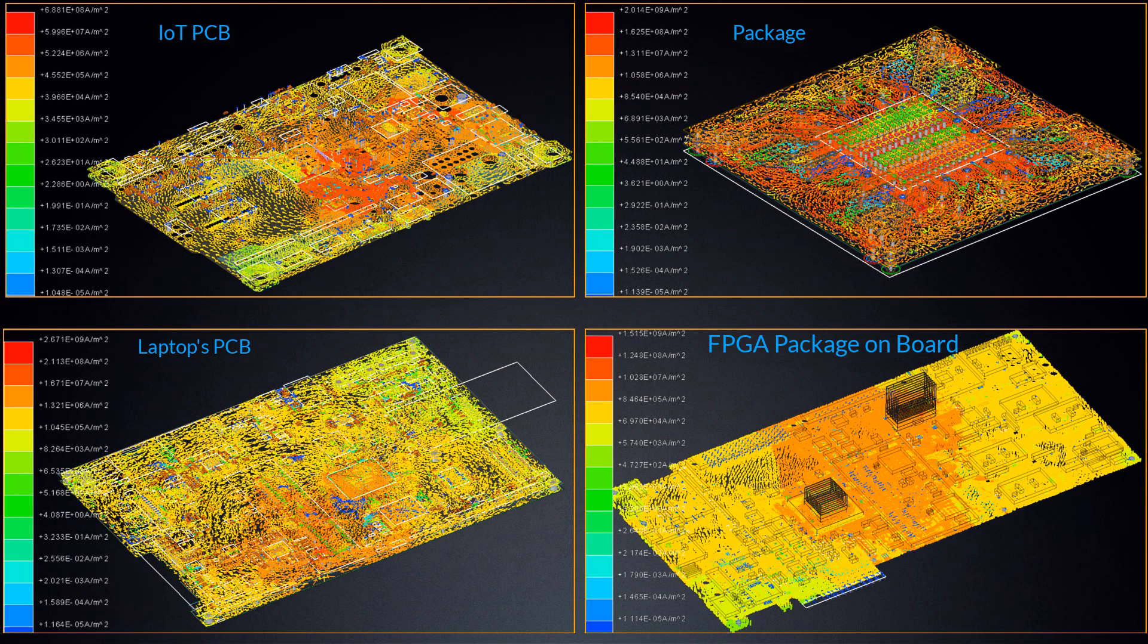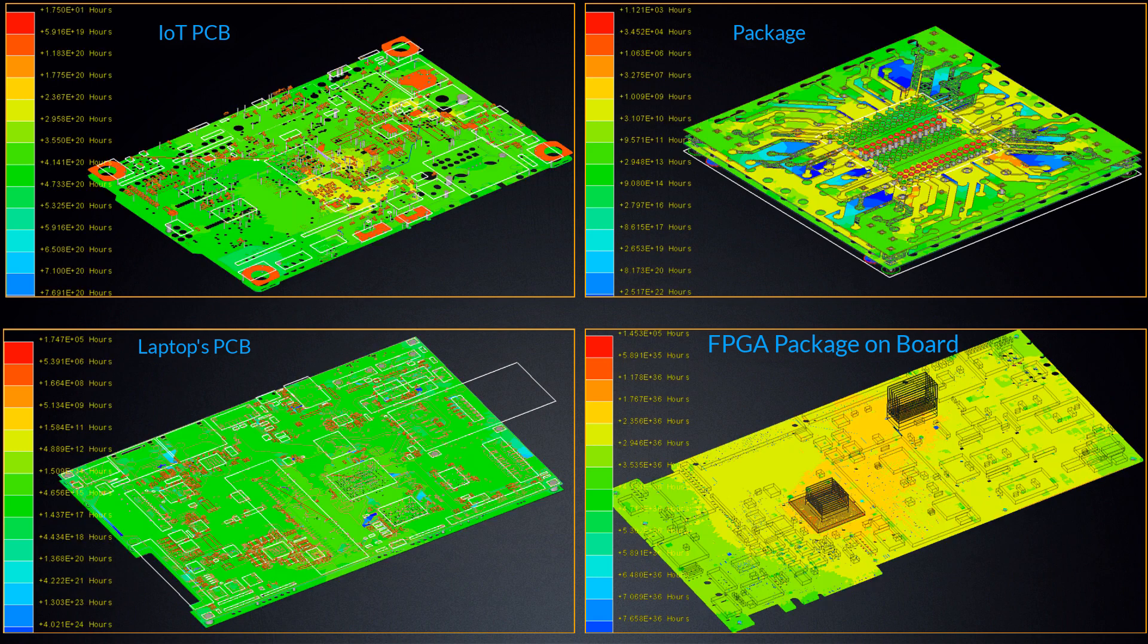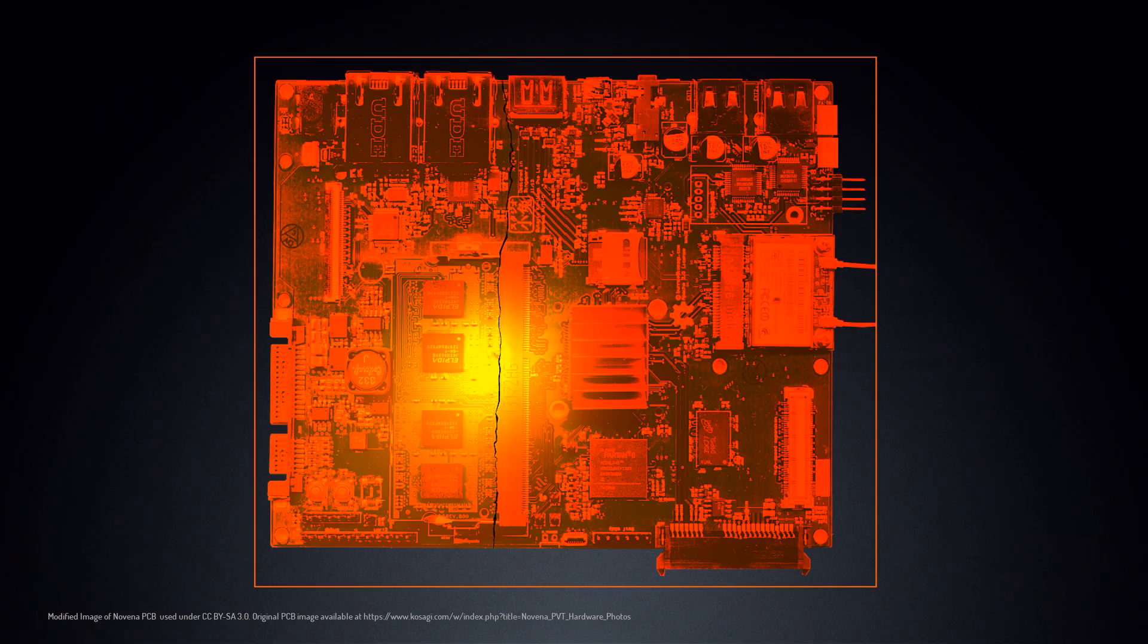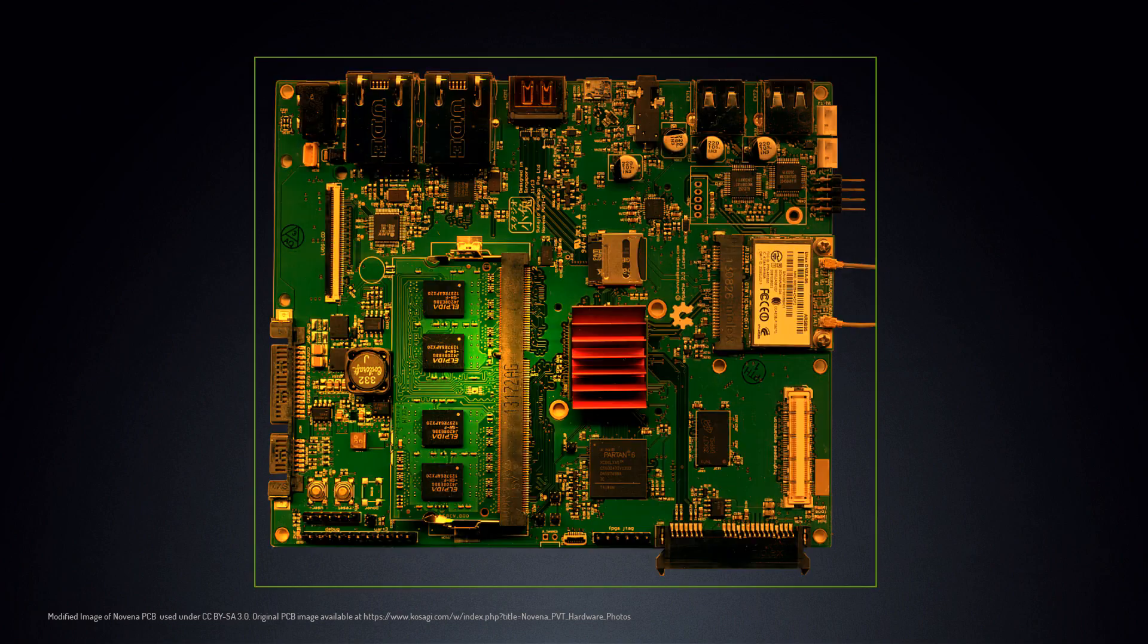ANSYS SI-WAVE can perform electrothermal simulation of complete boards and packages and uses the results to predict electromigration effects in interconnects. It estimates their lifespan and identifies potential points of failure, allowing designers to find reliability problems that might slip through the cracks before fabrication.